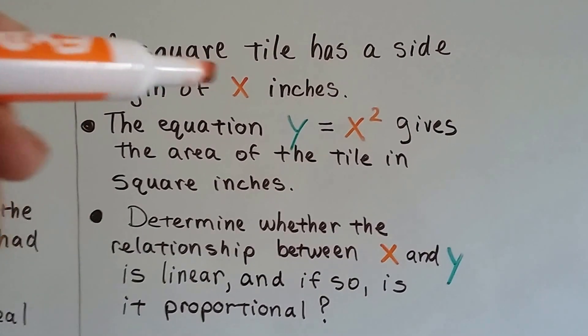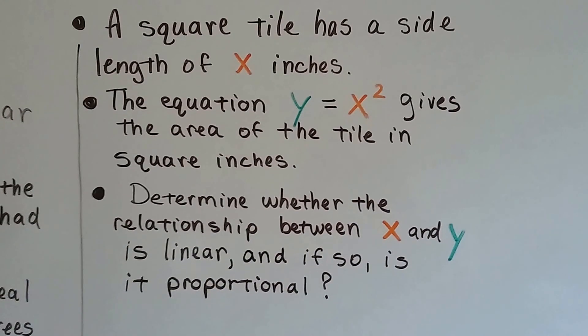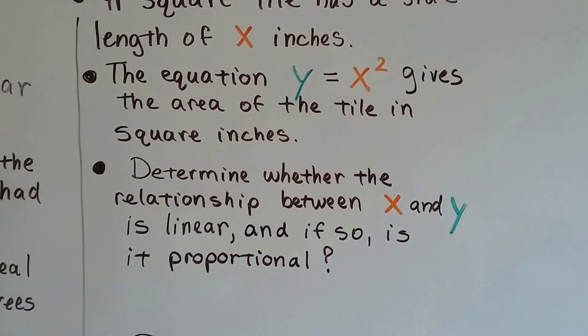then 10 times 10 would give the area of the tile. It would be x squared, 10 times 10. So determine whether the relationship between x and y is linear, and if so, is it proportional?